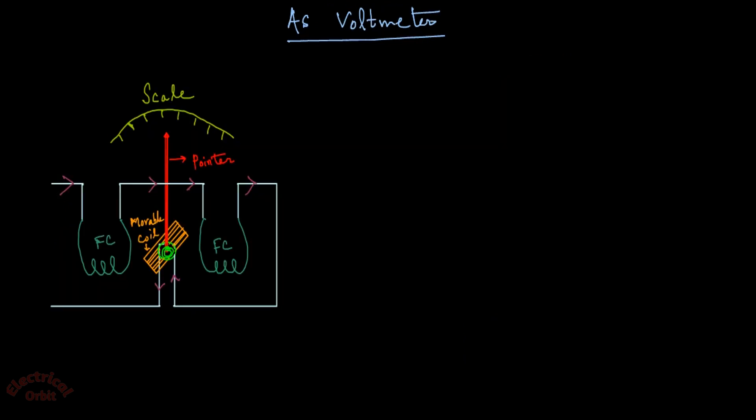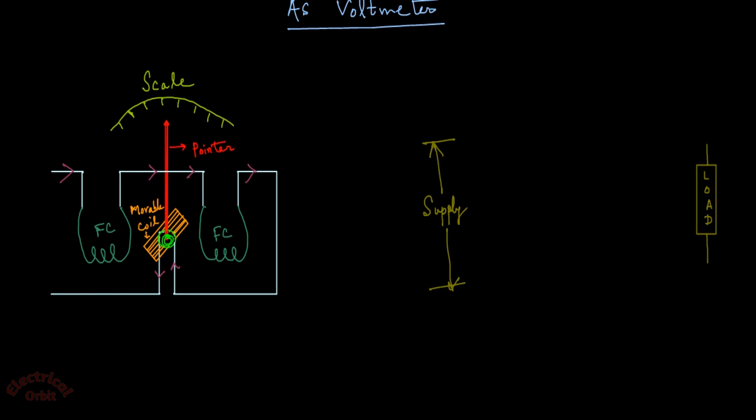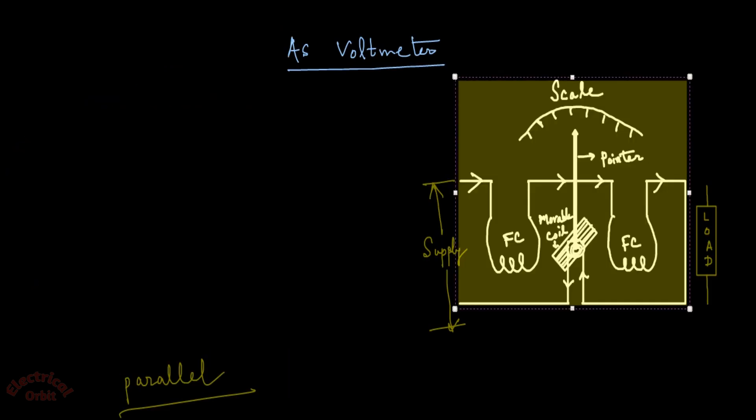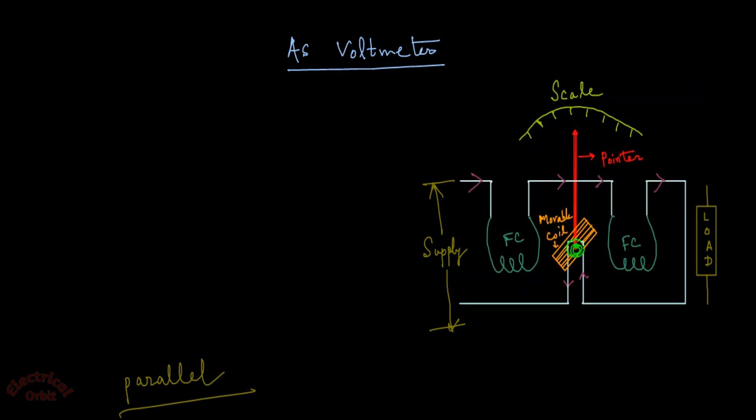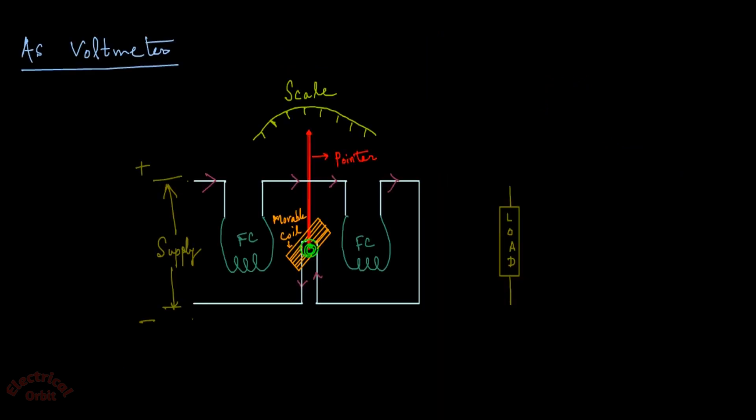Now we will use this electrodynamometer type instrument as a voltmeter. The same thing is here also, the difference is we have to connect this instrument in parallel instead of series like an ammeter. I have shifted this instrument here. Take the supply with this terminal as positive and this terminal as negative. Now connect one part of this instrument to the positive terminal of supply and another part to the negative part of the supply.